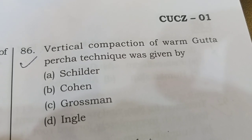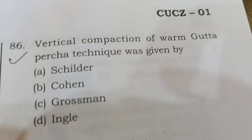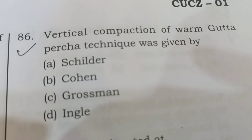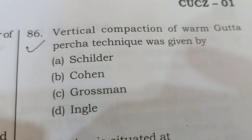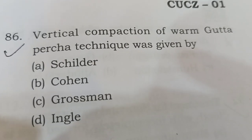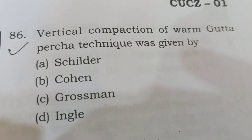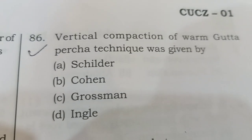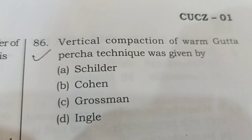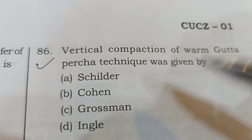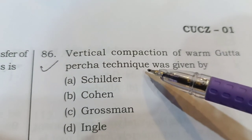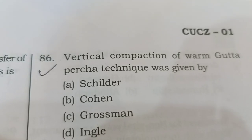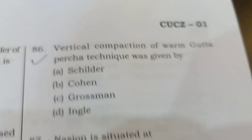Next question: Vertical compaction of warm gutta-percha technique was given by. Your options are: A) Schilder, B) Cohen, C) Grossman, or D) Engel. The correct answer is option A. Schilder gave the vertical compaction of warm gutta-percha technique.